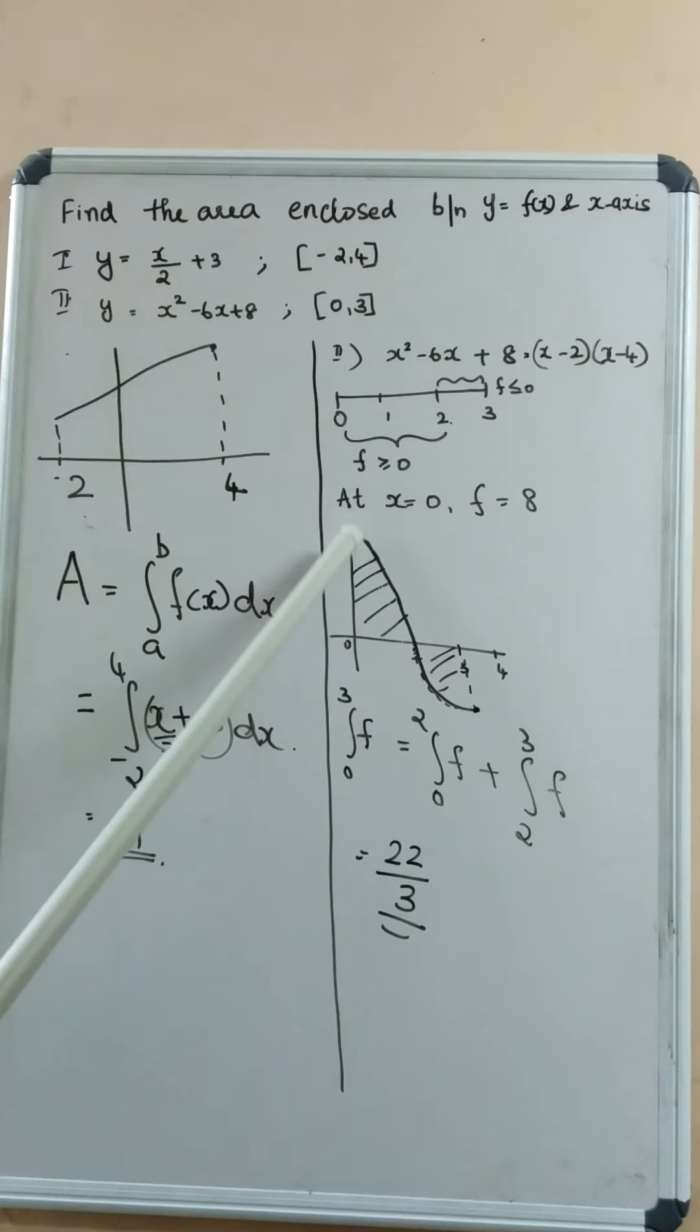So, we have to find the area enclosed by this curve, this area plus this area. Therefore, integral 0 to 3, we have to find the area means integral 0 to 3, f of x dx.